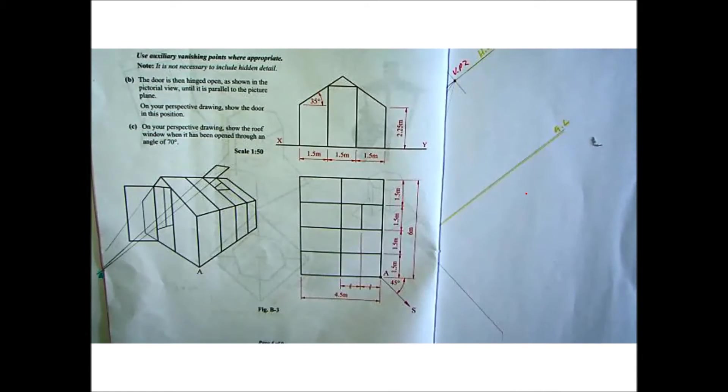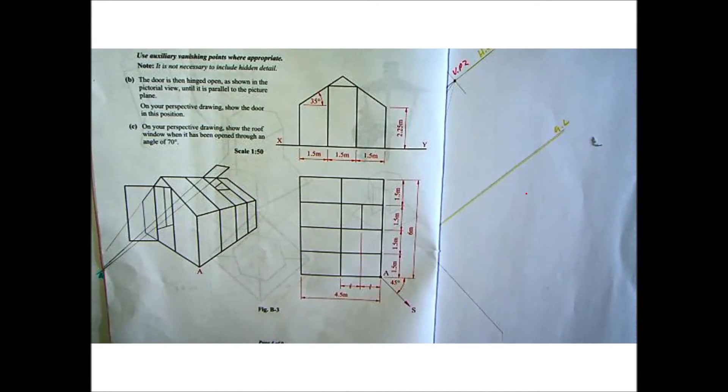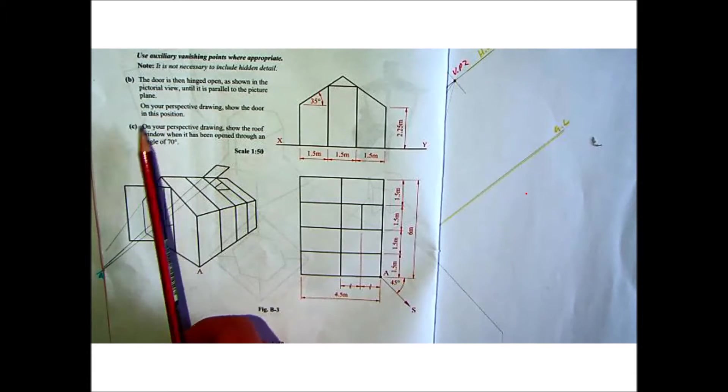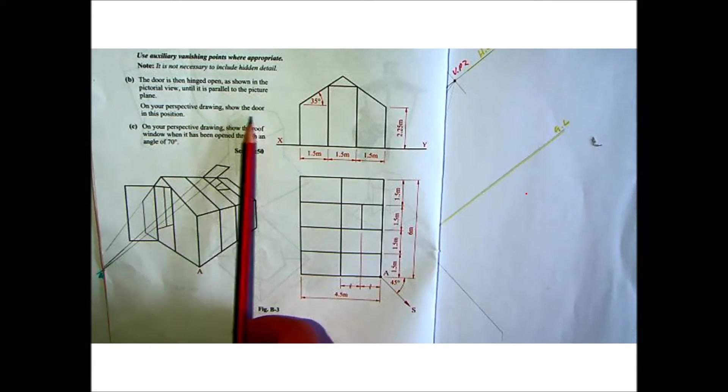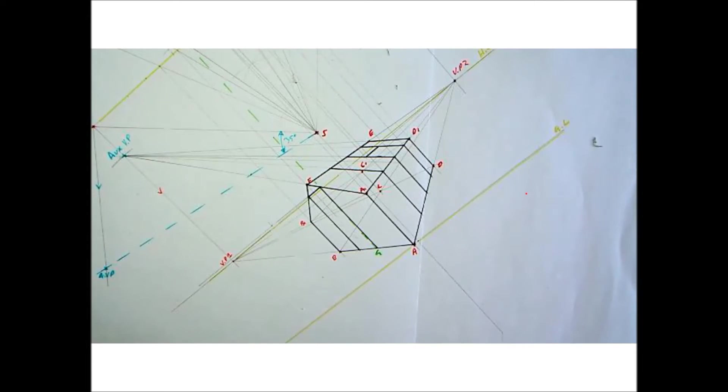So as always the three truths. Part B: the door is then hinged open as shown in the pictorial view until it's parallel to the picture plane. On your perspective drawing show the door in this position. So there you can see it opened out. But what we're going to have to do is work off our plan.